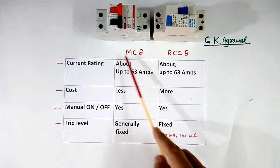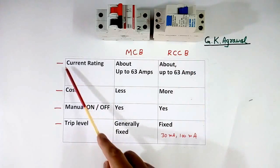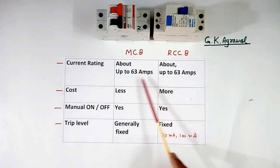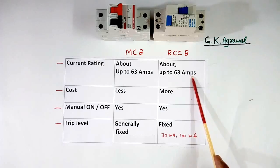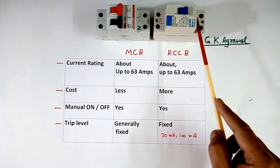These are detail of MCB. These are detail of RCCB. Current rating: both MCB and RCCB are available for current up to 63 A. This current is the load current, or contact current, which is flowing in this contact.